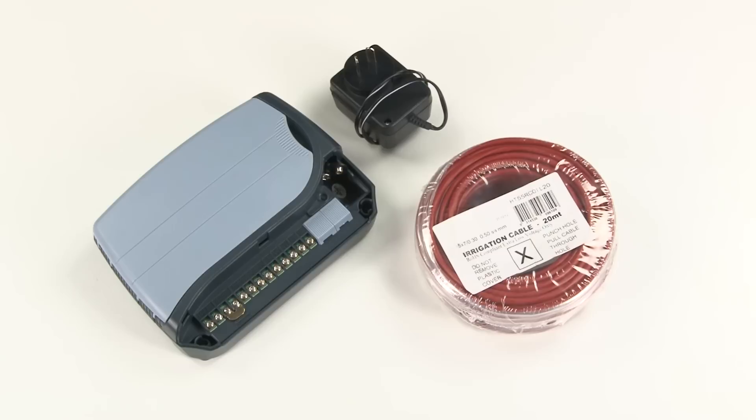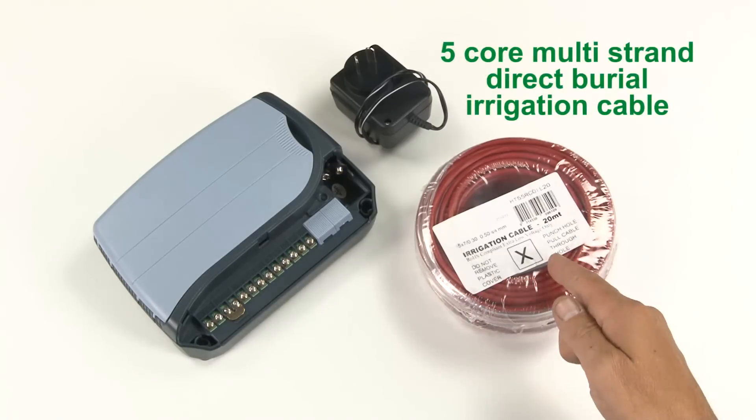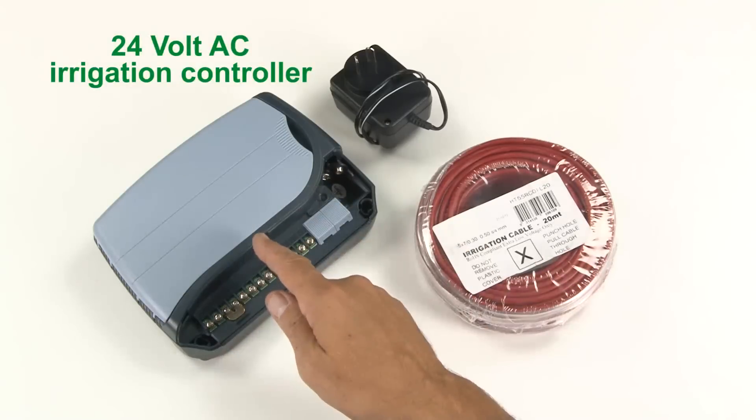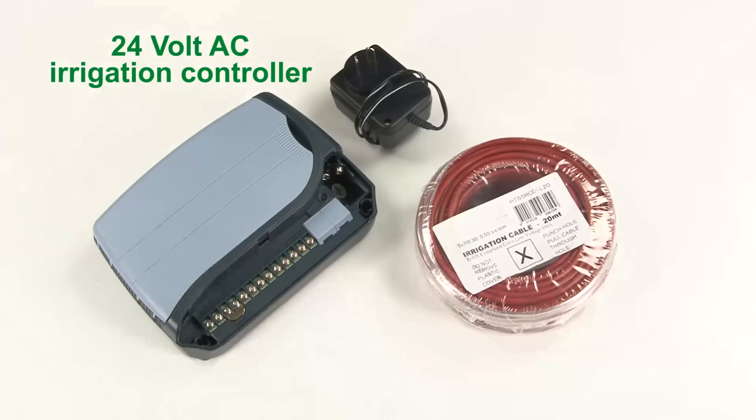You'll need a few other things to complete the wiring on your EasyValve 4 including a suitable length of five core multi-strand direct burial irrigation cable and a 24 volt AC irrigation controller of your choice.